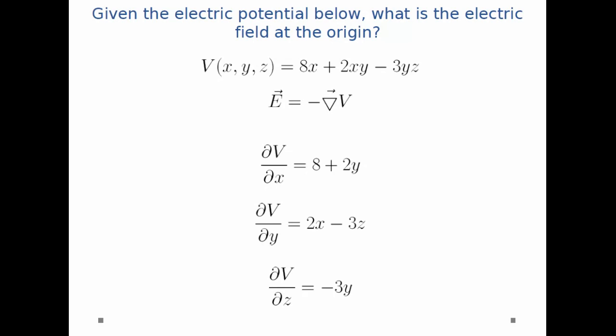And now we have an expression for each of those three pieces we can plug in the point zero zero zero. That is the origin itself. So x equals zero, y equals zero, and z is equal to zero. And so you're going to see that every one of those terms cancels out except for 8 in dV/dx. And so finally your answer is going to be E is equal to minus, don't forget the minus sign in front of everything, 8 in the x-hat direction, newtons per Coulomb.